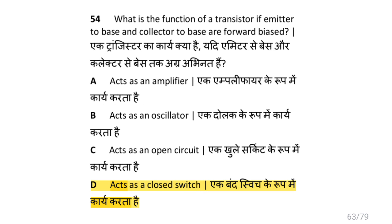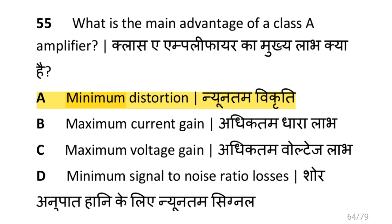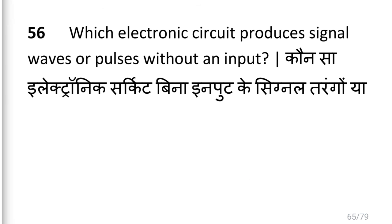What is the function of a transistor if both emitter-to-base and collector-to-base are forward biased? i.e. it acts as a closed switch. What is the main advantage of a class A amplifier? i.e. minimum distortion.